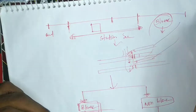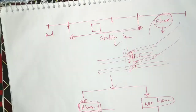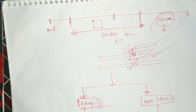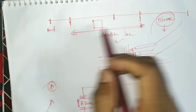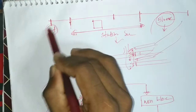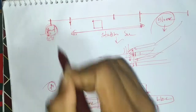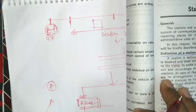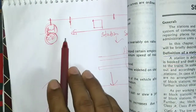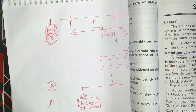We will talk about the station in the section. The A, B, C classification of stations will be discussed. The A-class station will have an outer signal. The A-class station will have the outer signal positioned clearly.